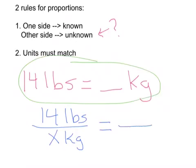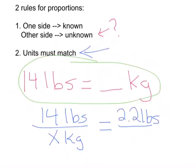The other side is where we're going to put our known — that's what we're going to get from our chart. In practicing and memorizing that, we know that there are 2.2 pounds for every one kilogram. That being said, that's where rule number two comes in. Rule number two says that our units must match, meaning what's on top of the unknown side — which is pounds — also goes on top of our known side. That was our 2.2. We know 2.2 pounds for every one kilogram. My X amount of kilograms is on the bottom of my unknown side, so my one kilogram must go on the bottom of the known side.